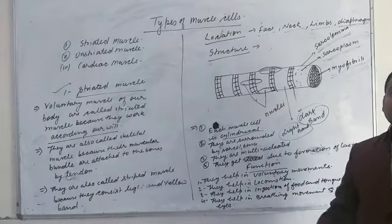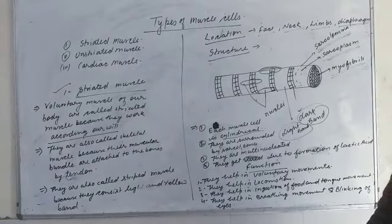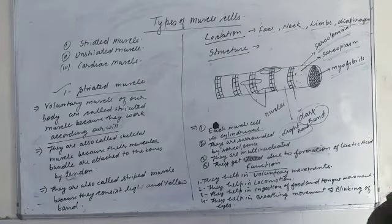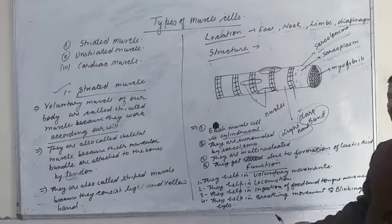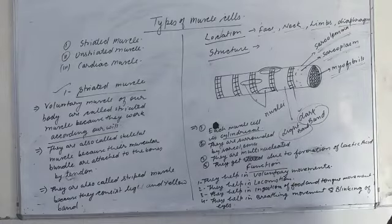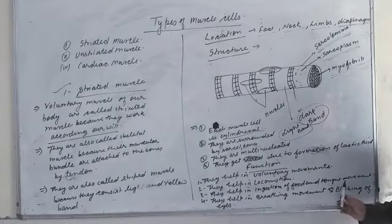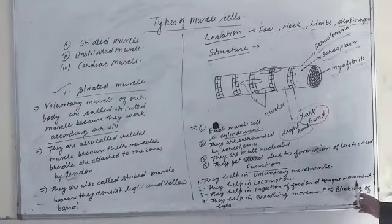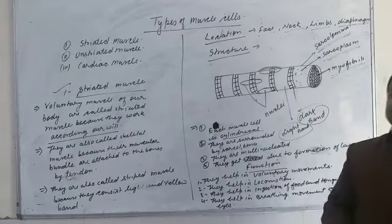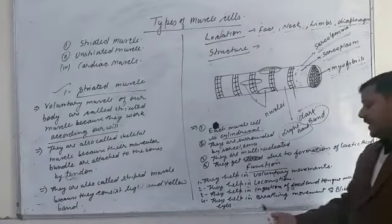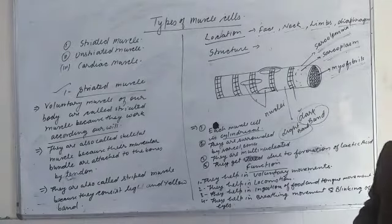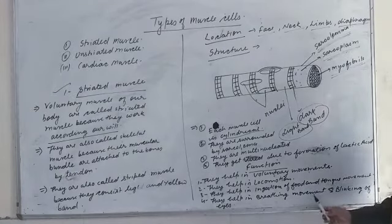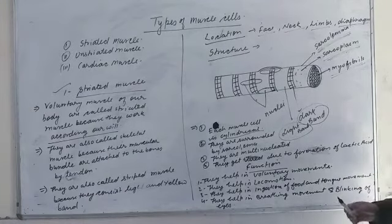When you ingest food and take it inside the body, that is called ingestion. In our body, when food is ingested, the striated muscle helps. If we talk about food movement, striated muscle helps. Striated muscle helps breathing movement. When we talk about breathing movement and inhalation happens, our body uses striated muscle.